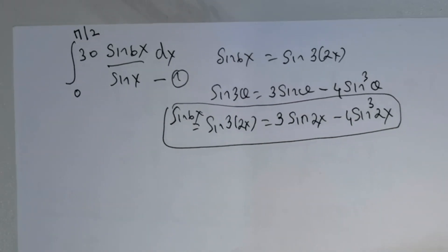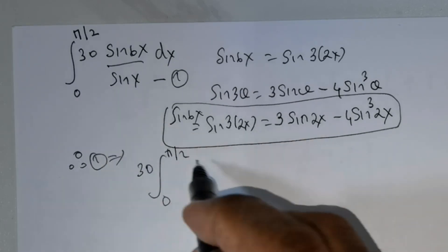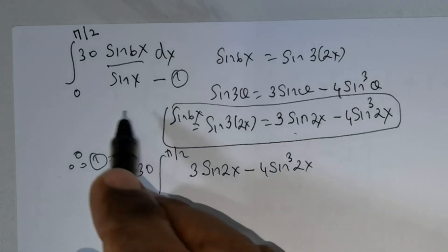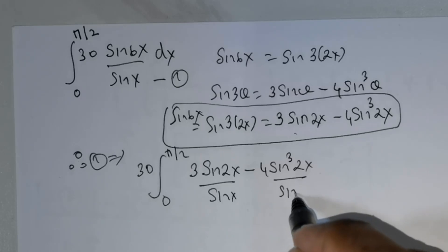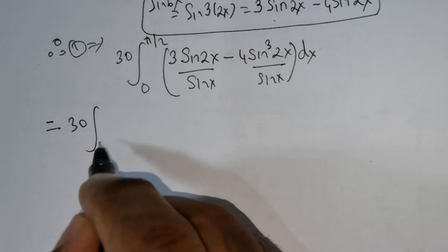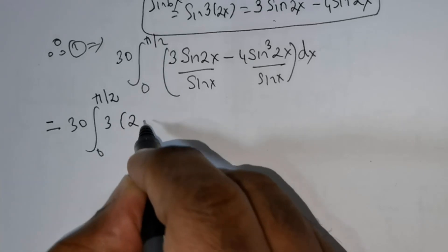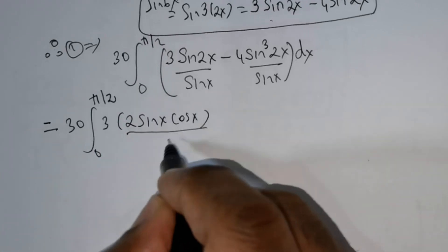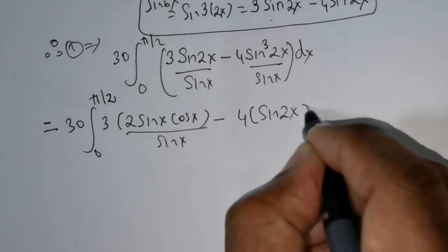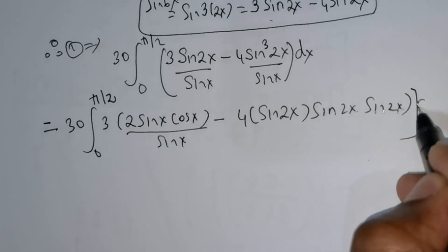So I can rewrite the integral as 30 times integral from 0 to pi over 2 of (3 times sin 2x minus 4 times sin cubed 2x) divided by sin x, times dx. Now sin 2x equals 2 times sin x times cos x, divided by sin x. And sin cubed 2x can be written as sin 2x times sin 2x times sin 2x.